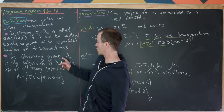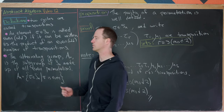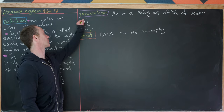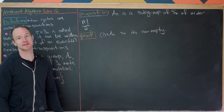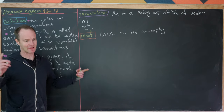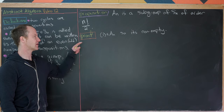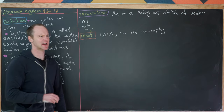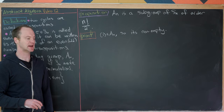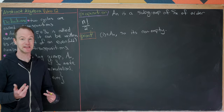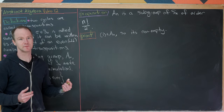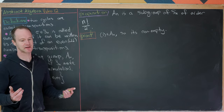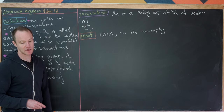Now let's show that the alternating group An is a subgroup of Sn of order n!/2. First, An is non-empty because it contains the identity: the identity can be written as the product of zero transpositions (the empty product), or if n≥2 as the product of a transposition with itself. So it's non-empty.